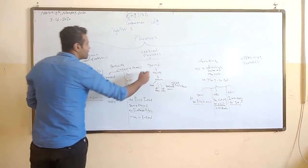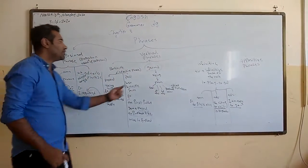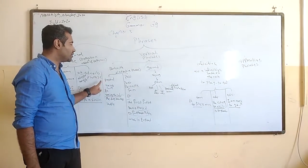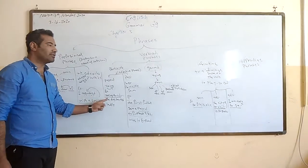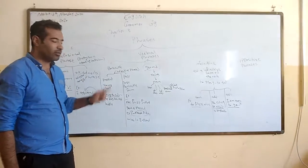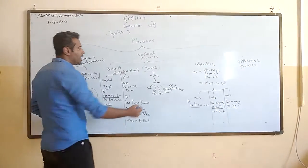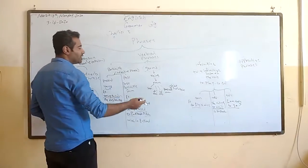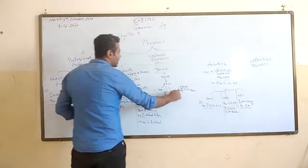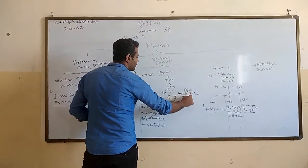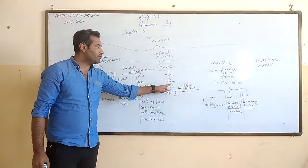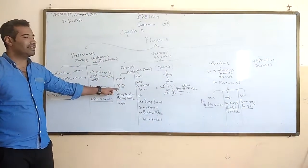The second verbal phrase is the gerund. The gerund means the verb plus -ING, exactly like the present participle. But here is the difference: the present participle works as an adjective, while the gerund works as a noun. The noun can function as a subject, direct object, indirect object, predicate nominative, or object of preposition. So verb plus -ING is the gerund — here it works as a noun — while the present participle works as an adjective.